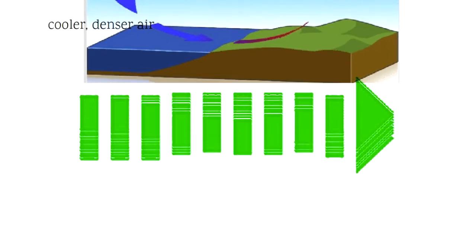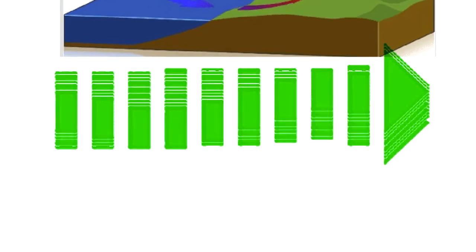This convection is one way that energy transfers from place to place in the atmosphere. The cycle of air is called the convection cell.